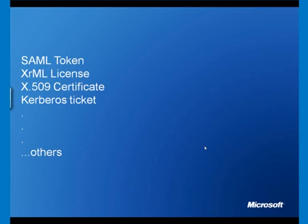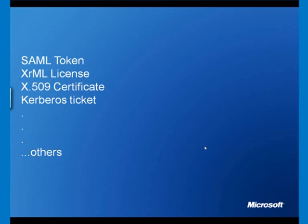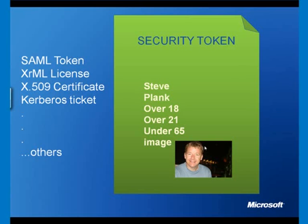What is a token? They're issued by a security token service, which is part of an identity provider, and they can be of any type: a SAML token, an XRML license, an X.509 certificate, a Kerberos ticket, or maybe some proprietary format for your own solution. Here's an example of a token with some claims — Steve, Plank, over 18, over 21, under 65, and there's an image. All of that can be wrapped up in a security token.